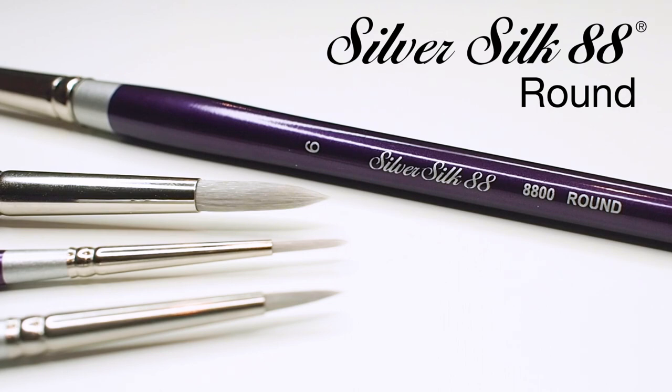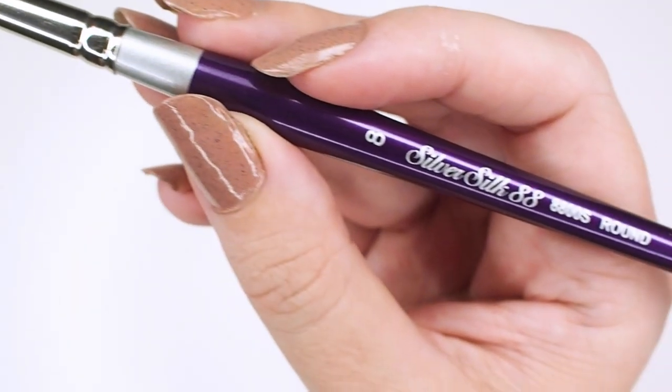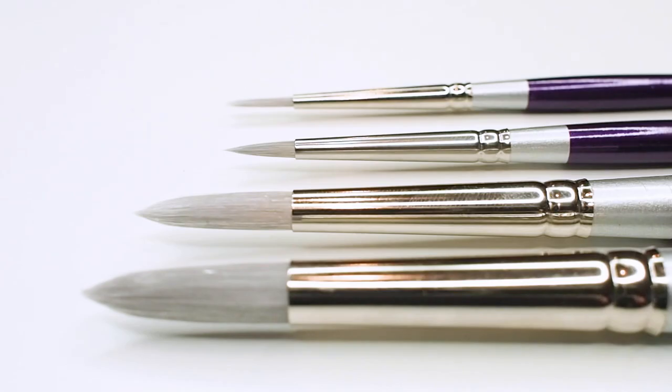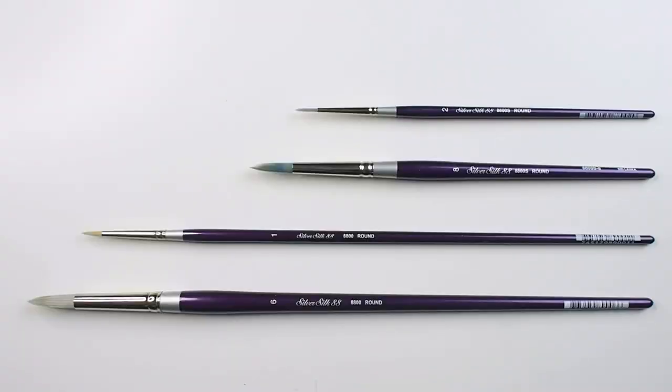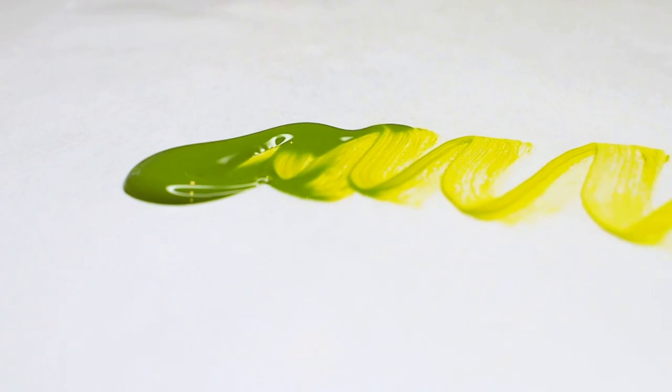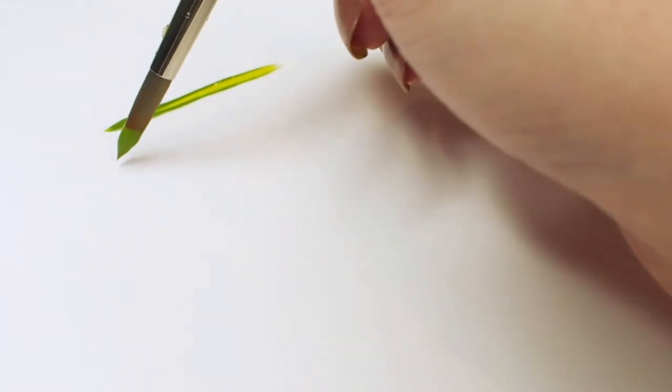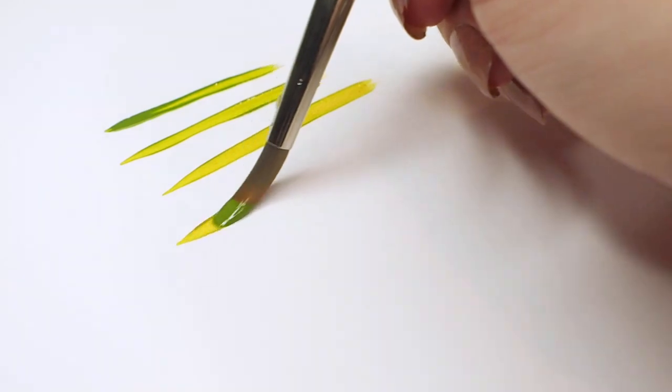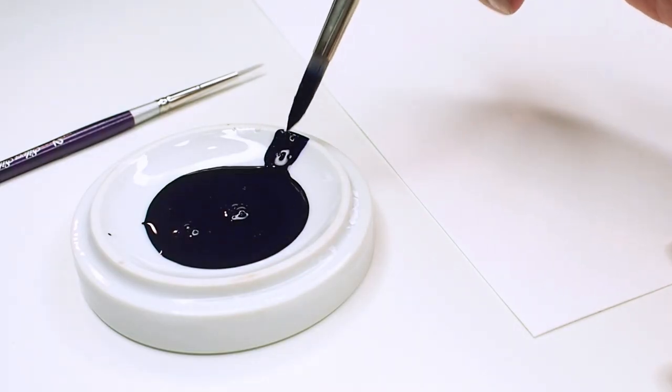Let's check out the Silver Silk 88 round. It's a top-of-the-line brush available in a range of sizes in both long and short handle. The head has a unique Taclon filament that has the right amount of give and carrying capacity, making it perfect for working with fluid or soft-bodied acrylics.